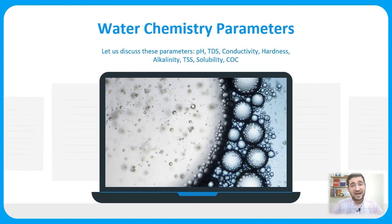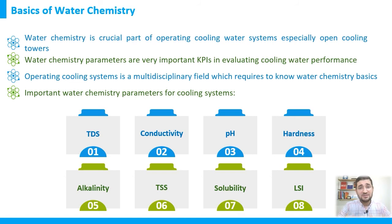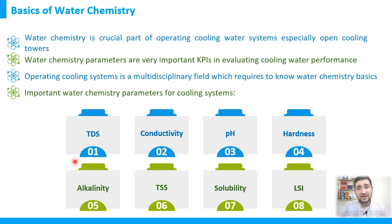Whenever you have any question, just write it down and contact me to elaborate more on that specific parameter. Water chemistry is very crucial for operation and maintenance of different water systems — desalination, cooling systems, boilers, and all others. Understanding water quality and water parameters will help you improve water quality, troubleshoot issues, and achieve smooth operation. Many of these processes have KPIs related to water quality such as COD, BOD, TDS, conductivity, pH, and many others.